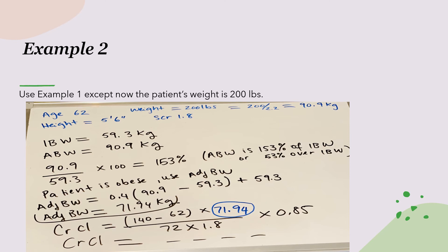For the second problem, we'll use the same scenario as before, but the patient's weight is now 200 pounds. We're again asked to calculate the creatinine clearance for the 62-year-old female. The weight must be in kilograms, so convert: 200 divided by 2.2 equals 90.9 kilograms. The height is still 5 feet 6 inches, so we already calculated the ideal body weight as 59.3 kg.